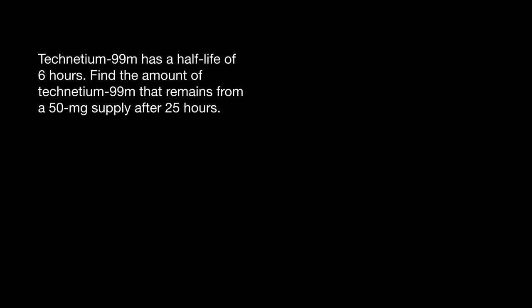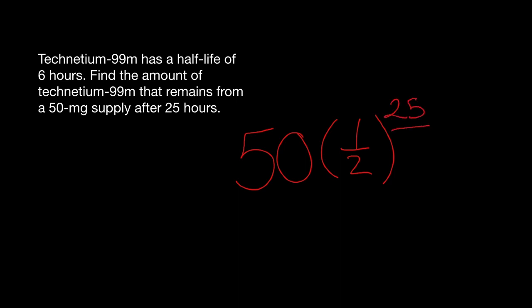Technetium-99m has a half-life of six hours. Find the amount that remains from a 50-milligram supply after 25 hours. We compute 50 times one-half to the 25 over 6. You end up getting approximately 2.78 milligrams remaining.